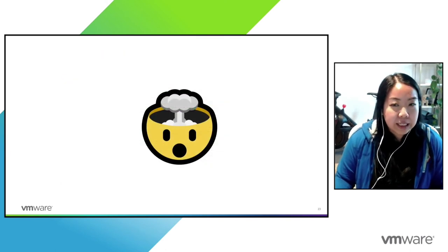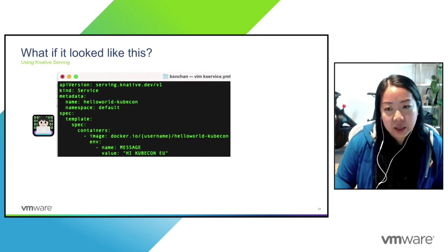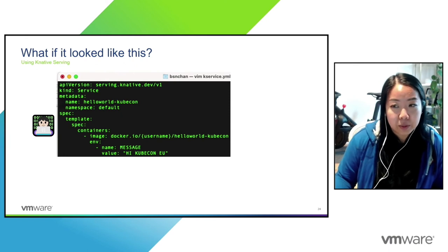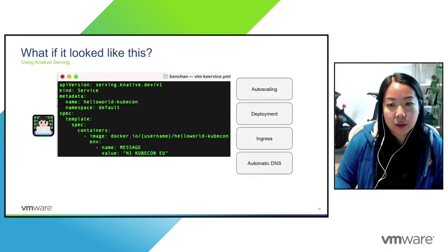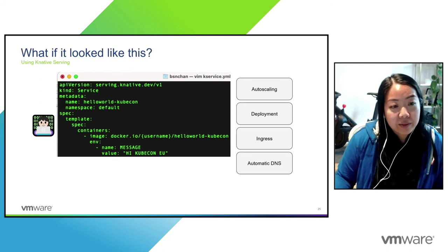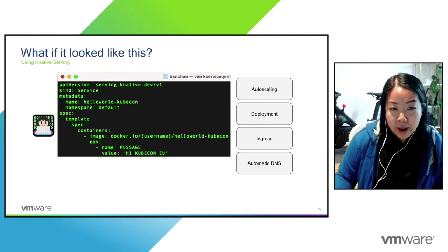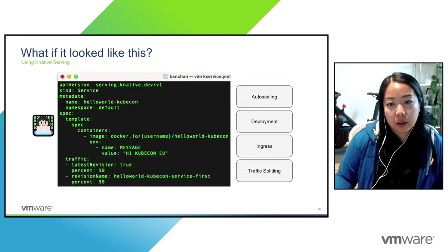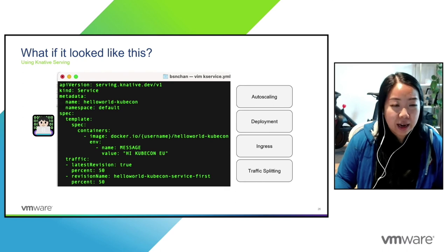The thing is, it really doesn't have to be this way. With Knative Serving, we've simplified a lot of that, so you — as the person writing and deploying the app — can focus on what matters to you. With Knative Serving, you get autoscaling, deployment, ingress, and automatic DNS, all created and managed for you. You can easily handle traffic splitting — and after all, that's what you probably do care about.